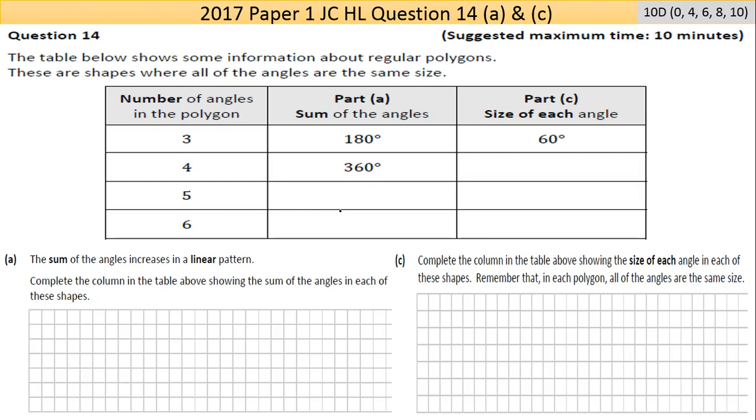Now this part 14, parts A and C are marked together, which is unusual. It's worth 10 points. The reason they're put together is that they are similar questions. The table below shows some information about regular polygons.